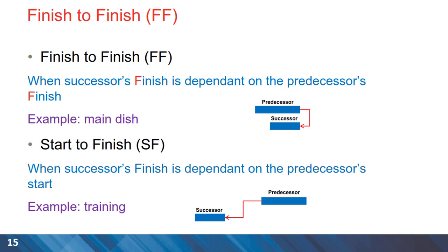Next activity relationship is finish to finish, and that's where the ending of two activities are directly connected. We can have a start to finish relationships in some instances as well.